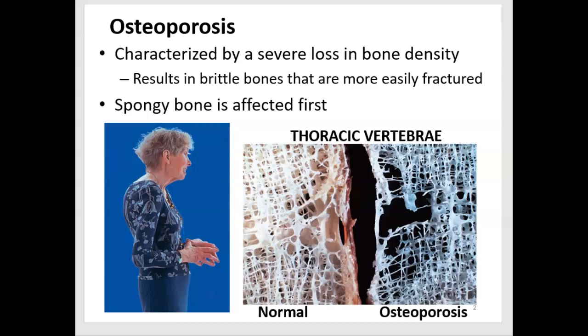Osteoporosis is characterized by a severe loss in bone density. Usually spongy bone is affected first. You can see the picture of two thoracic vertebrae bodies — normal on the left and osteoporosis on the right — and you can see there are fewer trabeculae and spicules. This results in bones being brittle and more easily fractured, and in some cases a collapse of the vertebrae, giving that rounded upper back shown in the picture.